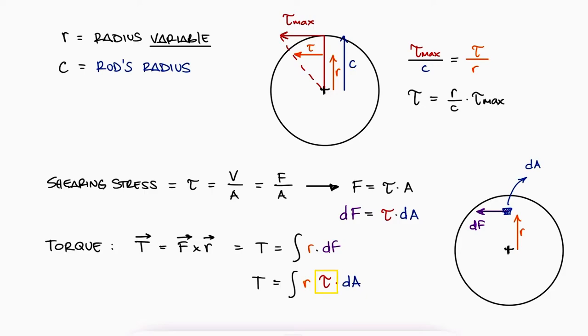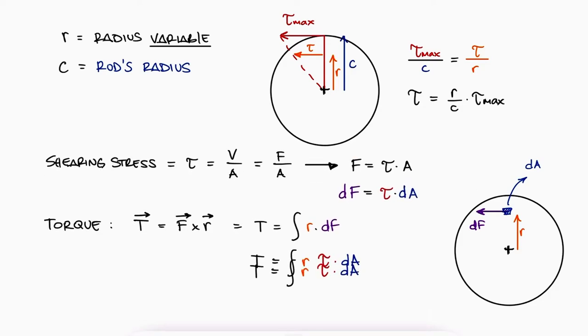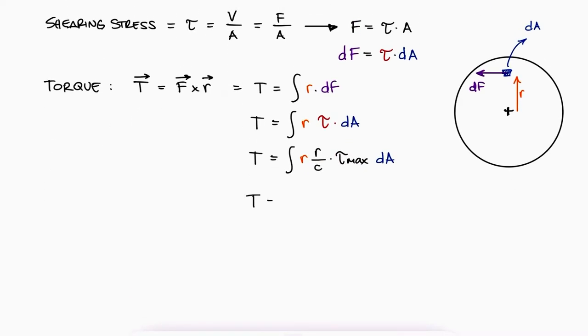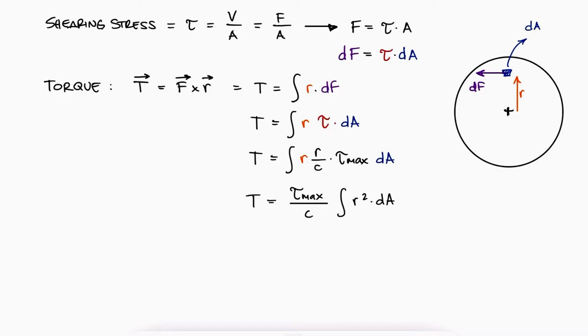Since tau is a function of the area's location, or more specifically, the radius, we need to substitute tau in terms of r, c, and tau max. Tau max and c are constant because they don't vary with the radius or the area, so they can come out of the integral, and therefore our expression for tau max, the maximum shearing stress, which happens at the surface of a rod, is equal to tc over the area integral of r squared dA.